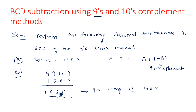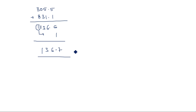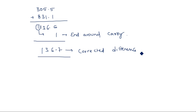Now we add 305.5 to 831.1. The addition gives 1136.6. A carry is generated because the result has more digits. This carry is added to the least significant digit — this is known as the end-around carry. So 1 plus 136.6 gives 136.7, which is the corrected difference.